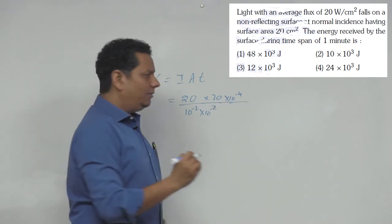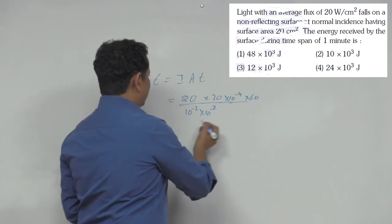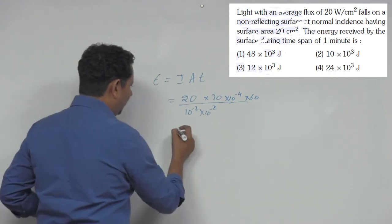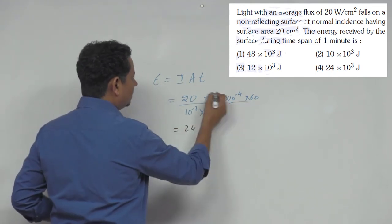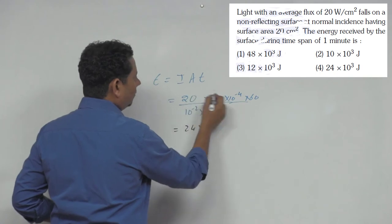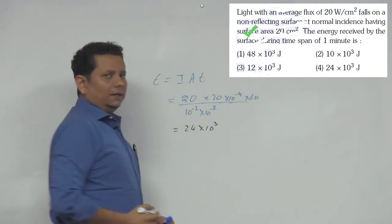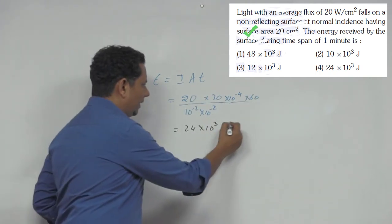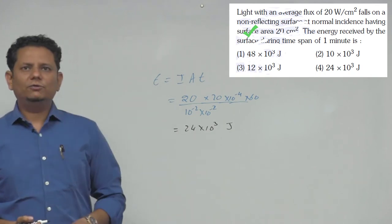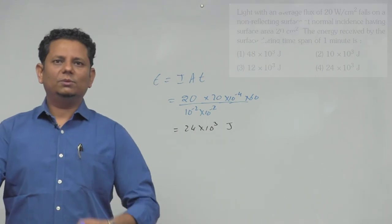Multiply it by time - one minute, which is 60 seconds. So that means 24 × 60 multiplied by 10 to the power 1, 2, 3. So the total energy will be 24 × 10³ Joule. That would be the right answer.